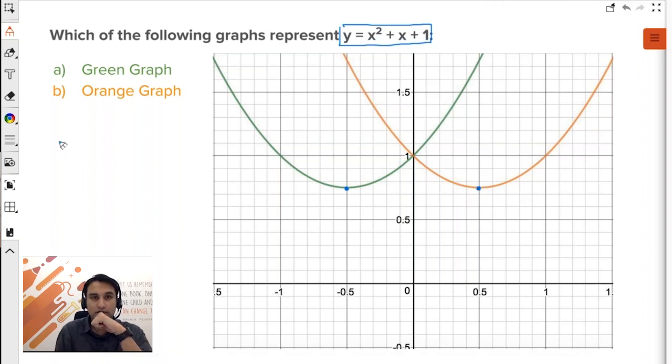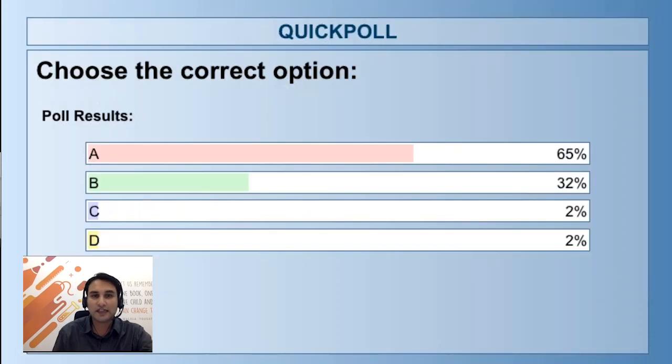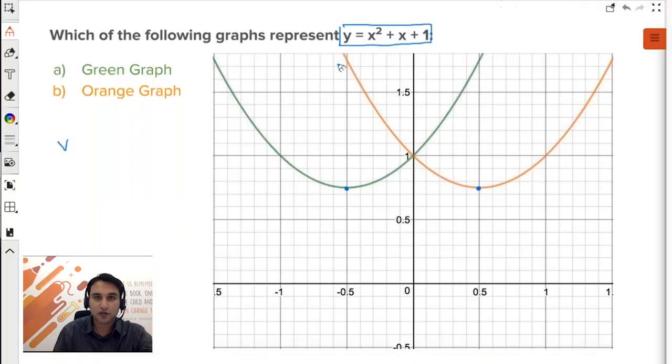All you need to calculate is the vertex: minus b by 2a, minus b by 2a comma minus d by 4a. Green is the correct answer. Why? Simple, I'll quickly tell you. So vertex is minus b by 2a comma minus d